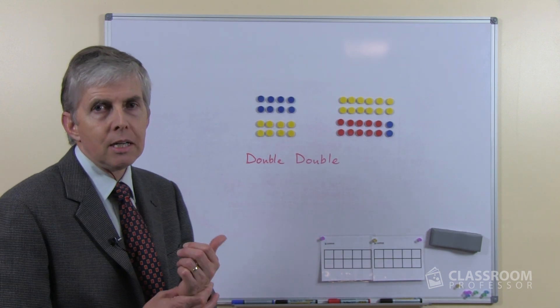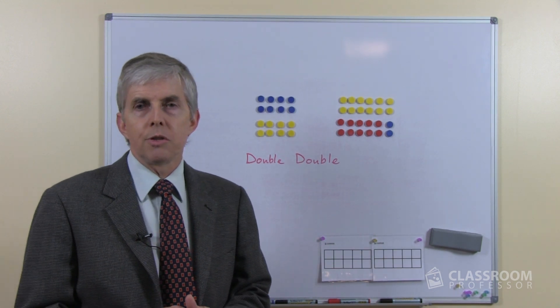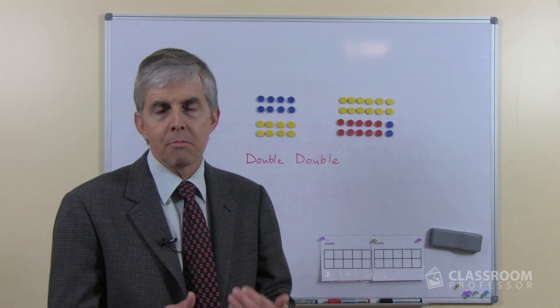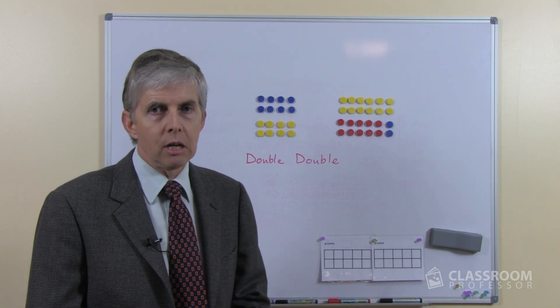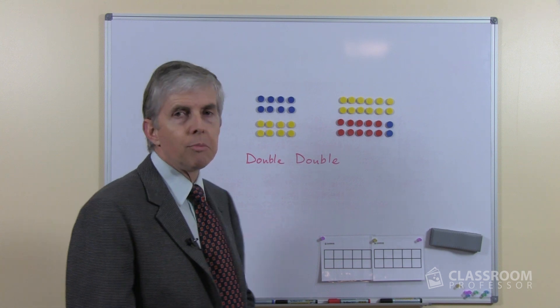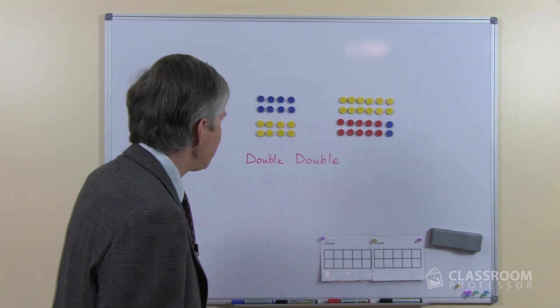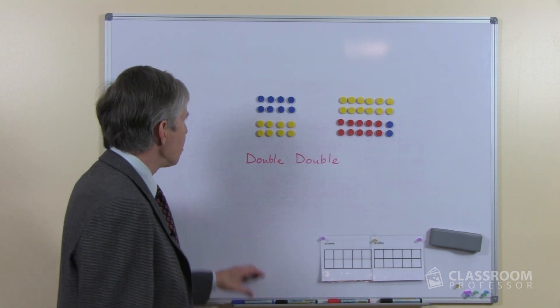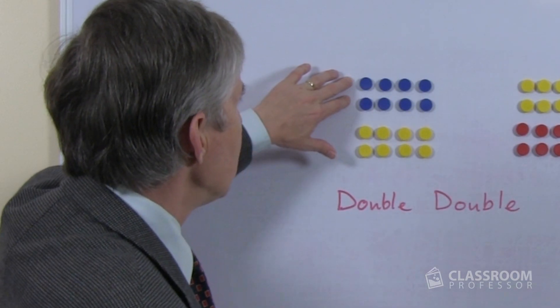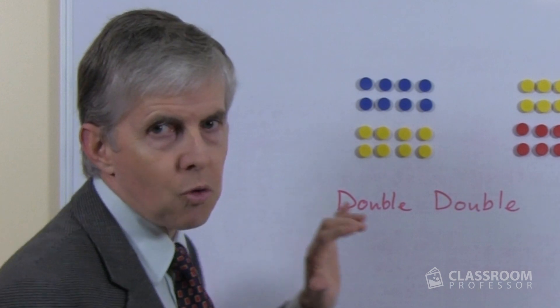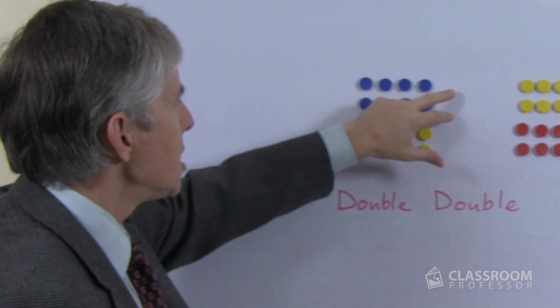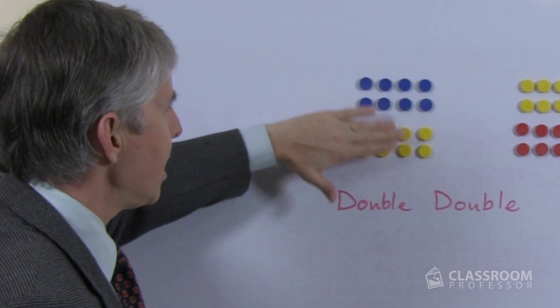So the double-double strategy, obviously it only works if the student is able to double, so they must know their doubles quite securely, and some of these are going to be larger numbers so we'll need to take a little bit more time. But the essential strategy is not that difficult, so here we have an example of 4 times 4, and of course double 4 is 8, and then we double 8 to make 16.